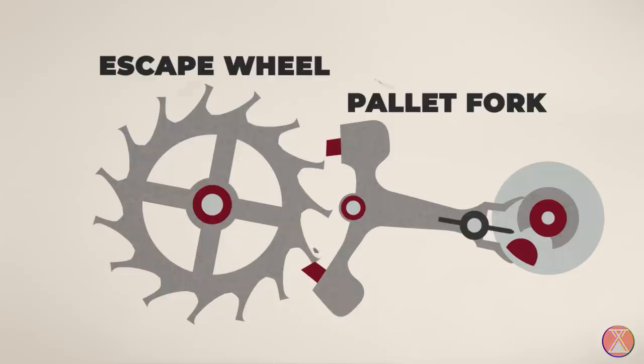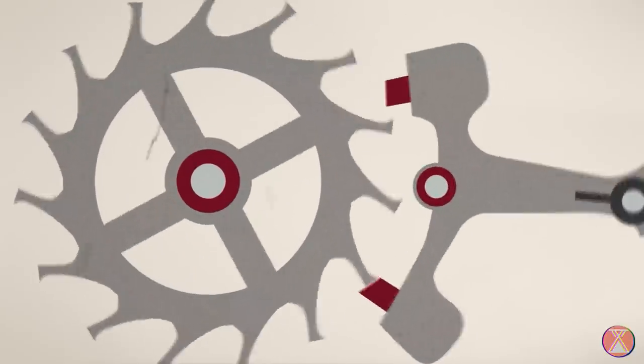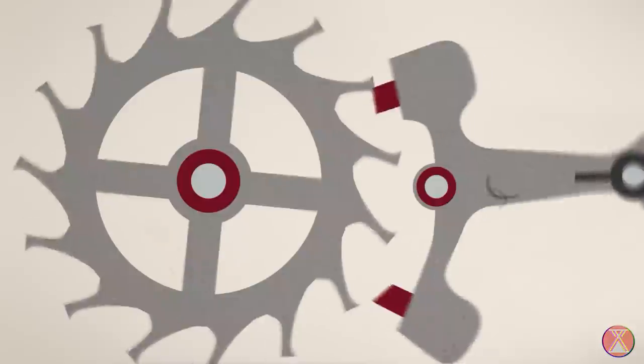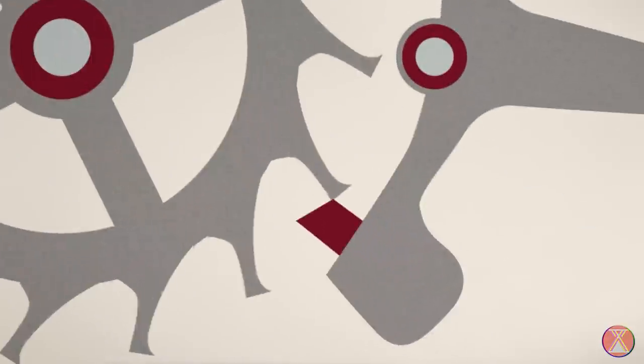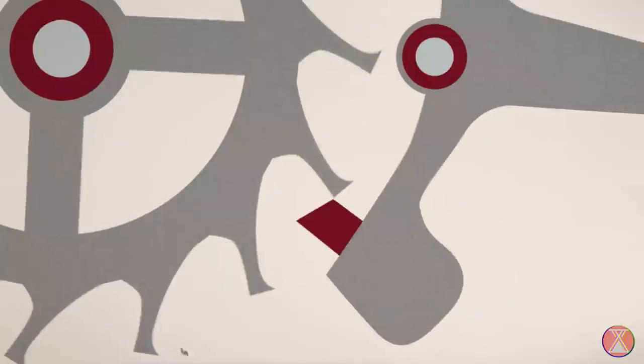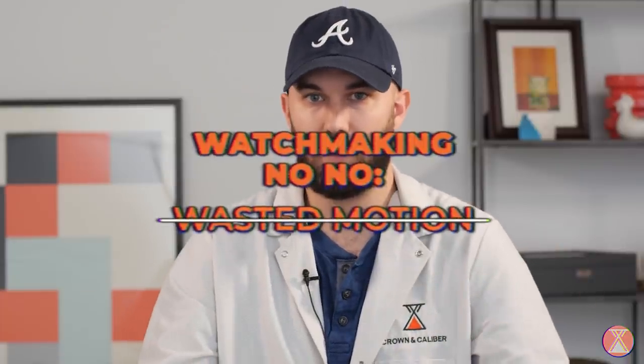Another problem arises from the travel distance and the force applied when the pallet fork swings back around to lock with the escape wheel. You see, there's actually that travel distance is so great and there's so much force that when the pallet stone comes back around and hits the escape wheel, the escape wheel will actually bounce off of it and then come back. And that is wasted motion. That's another no-no. You don't want wasted motion.